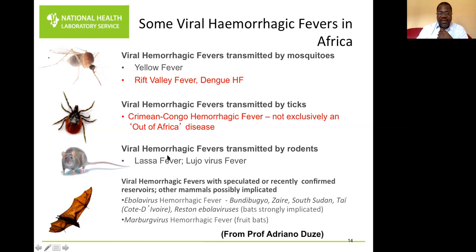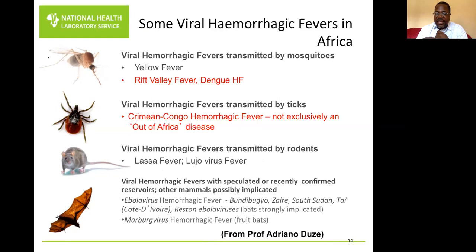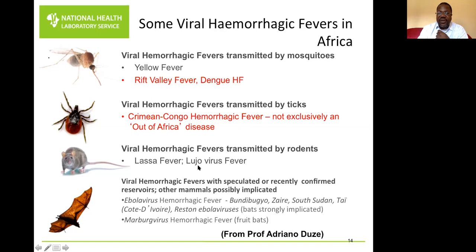Viral hemorrhagic fevers transmitted by rodents include Lassa fever and the Lujo virus fever. Lujo stands for Lusaka and Johannesburg, named after the woman discussed in part one who came from Lusaka in Zambia to South Africa, but neither country wanted to take responsibility, so scientists named the virus Lujo so they could share the responsibility.